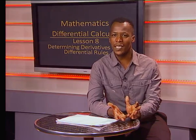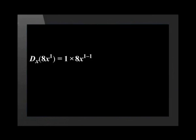That was quite easy. Let's do the next term now. Applying the same two steps to determining the derivative of 8x, the new coefficient will be 1 multiplied by 8 and the new power of the variable will be 1 minus 1. Therefore, the derivative of 8x equals 8.